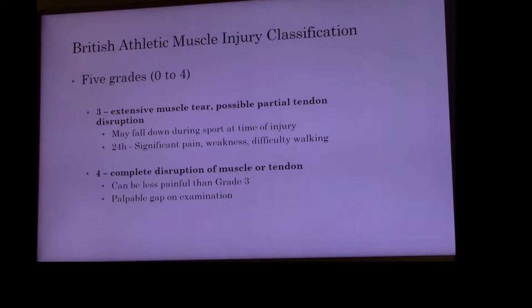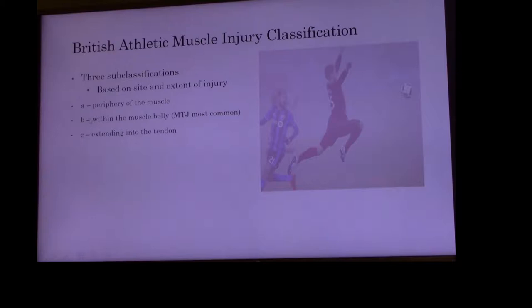Grade four is a complete disruption of the tendon — obvious on palpation, you can feel it and probably see it. Especially in the rectus femoris, you can sometimes see these gaps more easily than in hamstrings. It could also be less painful because there's nothing holding it. They classified it zero to four, then subclassified A, B, or C: A would be the periphery of the muscle, B within the muscle belly at the myotendinous junction (the most common), and C extending into the tendon.